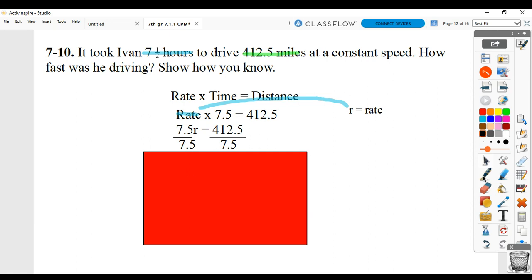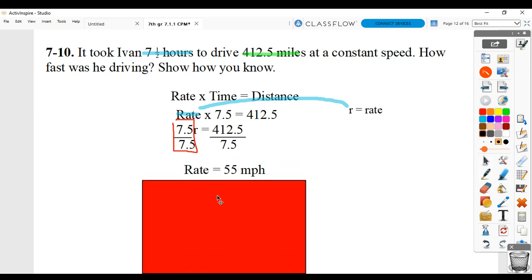If we divide by 7.5 on this side, we're just going to get R. If we divide it on this side, we're going to get the value of R. So what you end up getting is 55 miles per hour.